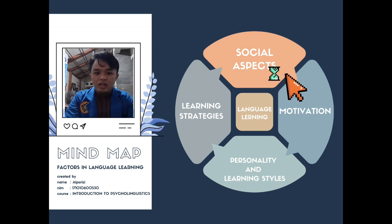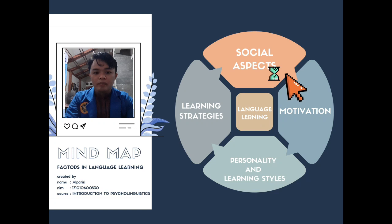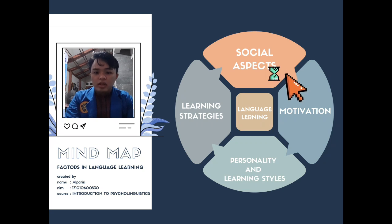Social distance is the cognitive and applicative proximity of two cultures. In this context, the term is used metaphorically to denote the similarity between two cultures. Some learners may feel this distance against the target culture in the process of second language learning.